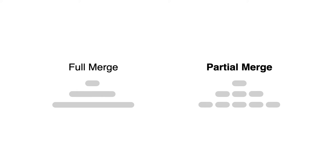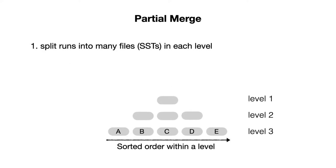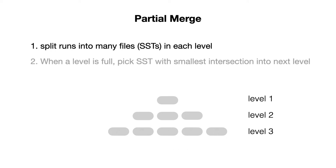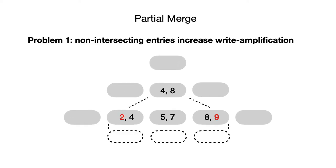Let us now examine the alternative, partial merge. With partial merge, we split each level into multiple files known as sorted string tables or SSTs. The data is still sorted across all SSTs within each level. When a level is full, we pick the file that intersects with as little data as possible at the next larger level and compact it there. This requires less space than with full merge since we compact smaller units of data at a time.